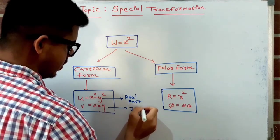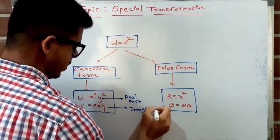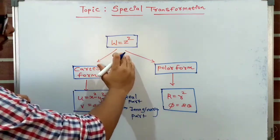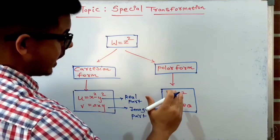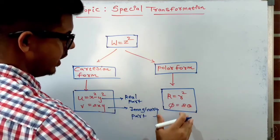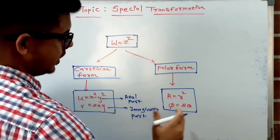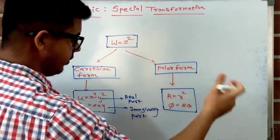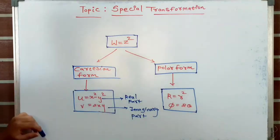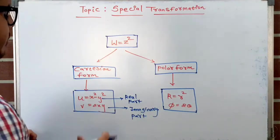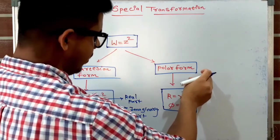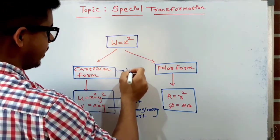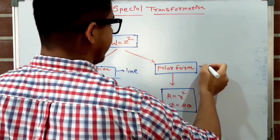In polar form, the w = z² transformation can be written as R = r² and φ = 2θ. You will understand this polar form better when we solve problems related to it. As a hint: the Cartesian form is used when the equation of a line is given, and the polar form is used when the equation of a circle is given.